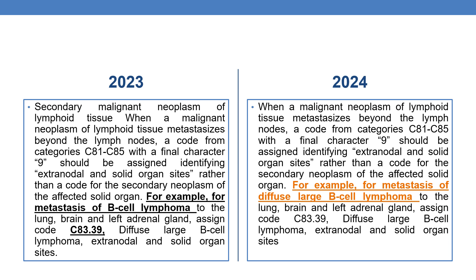The next change is also a slight revision of terminology, regarding secondary malignant neoplasm of lymphoid tissue. When a malignant neoplasm of lymphoid tissue metastasizes — that is, spreads from one organ to another — beyond the lymph nodes, a code from category C81–C85 with the final character 9 should be assigned, identifying the extranodal and solid organ sites, rather than a code for the secondary neoplasm of the affected solid organ.